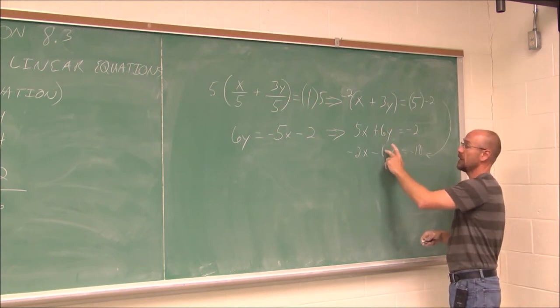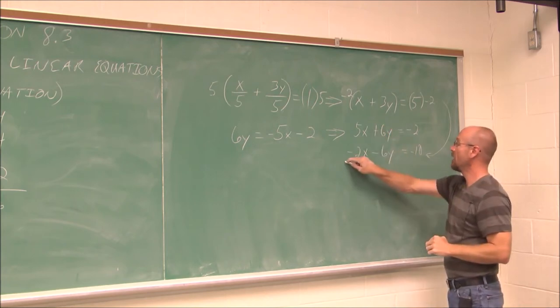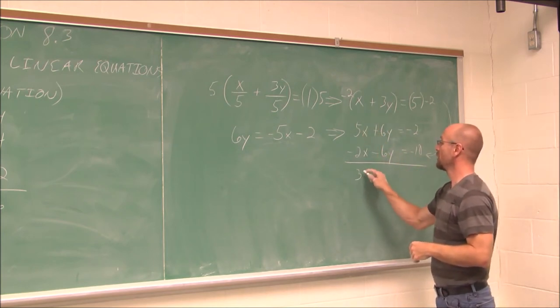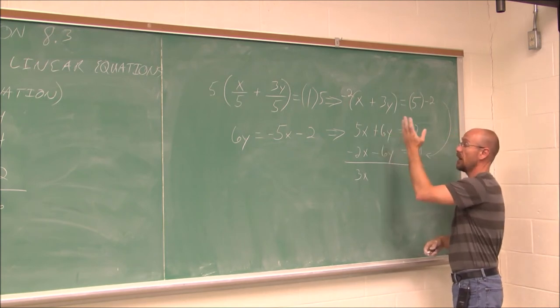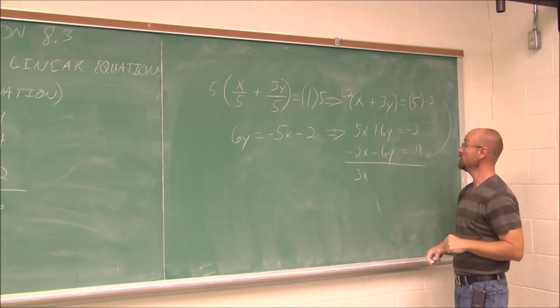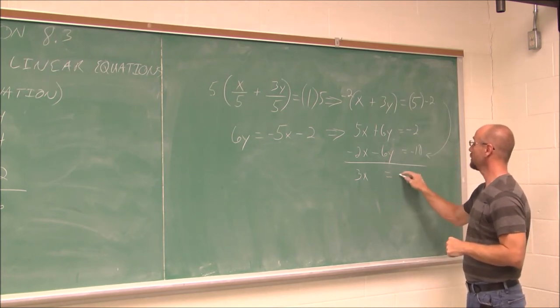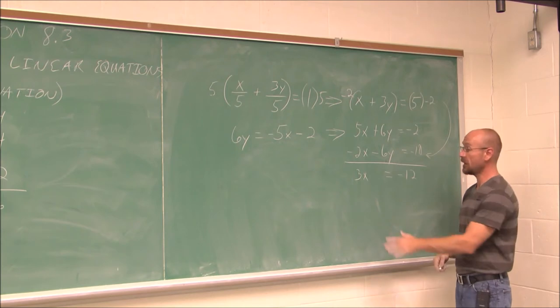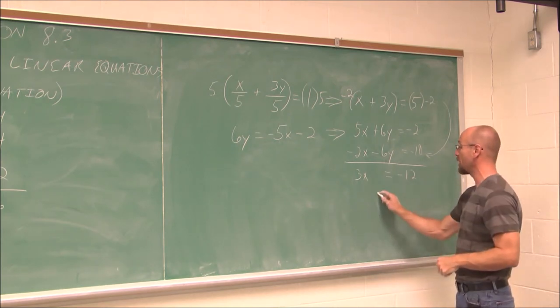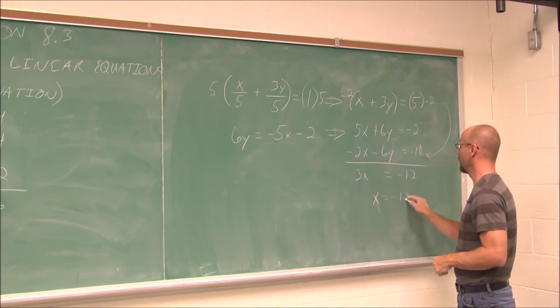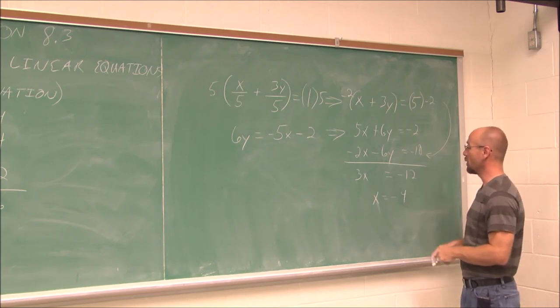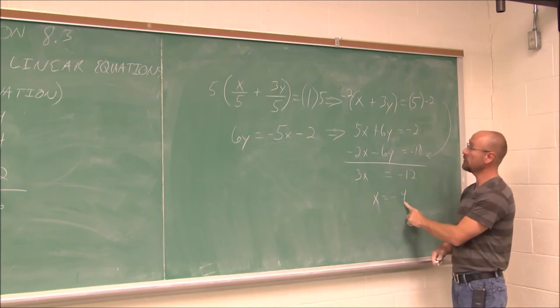Now that we have the same value of opposite sign, I can use the addition method. If I add 5x and negative 2x, I get 3x. 6y and negative 6y, no more y's. I've eliminated it using addition. Negative 2 and negative 10 is negative 12. And now I have an equation in one variable. And I can solve for that by dividing both sides by 3. x equals negative 12. Or excuse me, negative 4. 12 divided by 3. x equals negative 4.